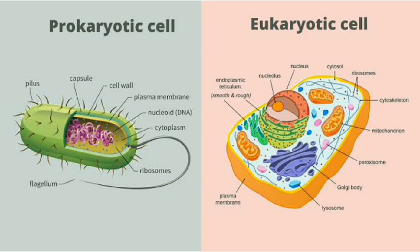In prokaryotic cells there is a single circular DNA molecule in the nucleoid, while eukaryotic cells consist of multiple linear chromosomes in the nucleus. Membrane-bound organelles are absent in prokaryotic cells and present in eukaryotic cells. Flagella are made up of two proteins in prokaryotic cells, while some eukaryotic cells without cell walls contain flagella. The cell envelope of prokaryotic cells is mostly made up of peptidoglycan, while in eukaryotic cells it is made up of cellulose, chitin, or pectin.